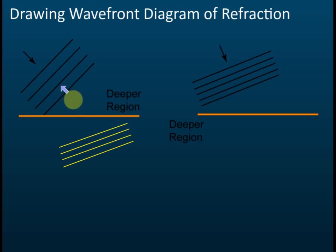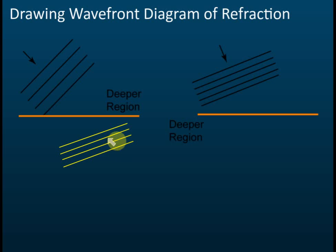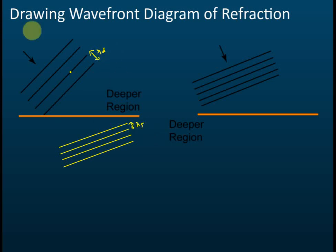So this is the answer for the deeper to shallower case. First, you must show that the direction of the wave is refracted closer to the normal. Second, you must show that the wavelength is shorter. The wavelength is the distance between the wavefronts — this is lambda-d (deeper) and this is lambda-s (shallower). Lambda-s must be shorter.